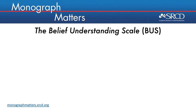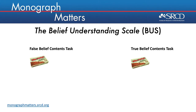The Belief Understanding Scale utilizes a commonly used false belief contents task with an added justification question, as well as a true belief variant of the task. In both tasks, children are shown different kinds of familiar containers. In this example, we'll use a candy box for both so we can directly compare the two tasks, but in practice, you'd want to use different containers for each. Any opaque container children are familiar with can be used — we've used band-aid boxes, crayon boxes, play-doh containers, and branded toy boxes such as Lego containers.